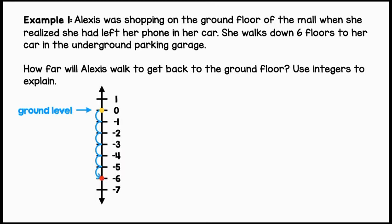At negative six, we can say that is Alexis' car. Let's use an equation to represent this situation. Negative six, the location of Alexis' car, combined or plus an unknown number equals zero. That will bring us back to the ground level.